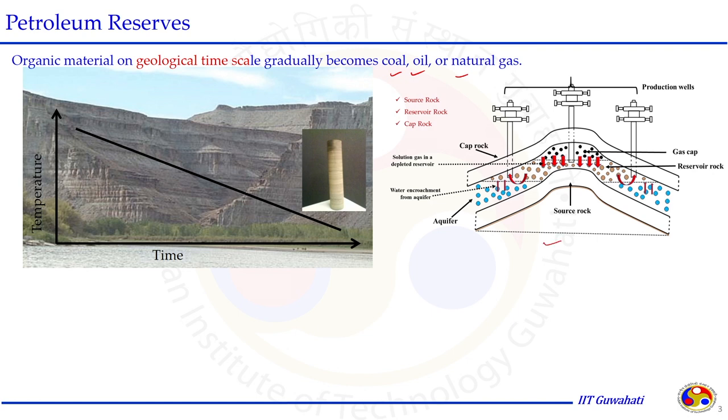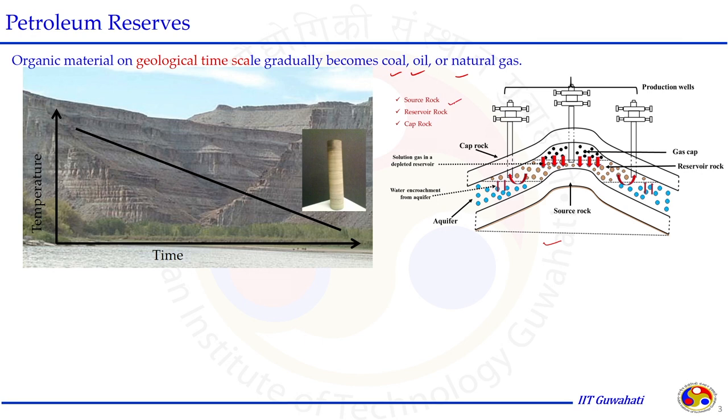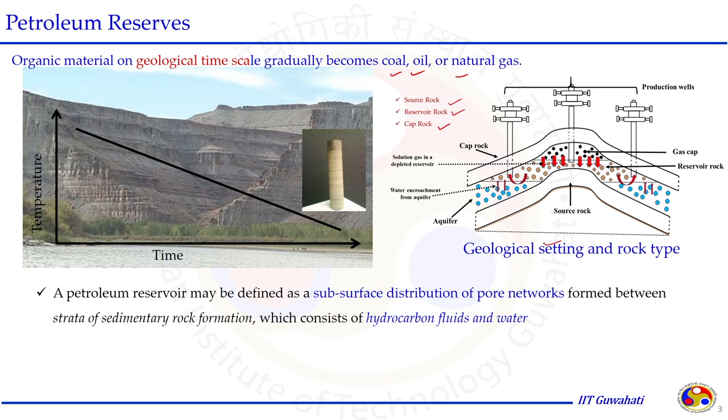The other picture shown here is the representation of how these hydrocarbon fluids are stored under the subsurface. For deposition of this hydrocarbon fluid, source rock, reservoir rock and cap rock are required. The setting of the geological formation and the types of rock actually determine whether hydrocarbon fluids are stored there, and what the composition or phase of that hydrocarbon fluid is underneath the surface at the geological reservoir formation.